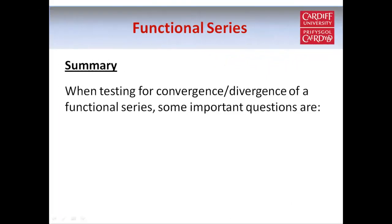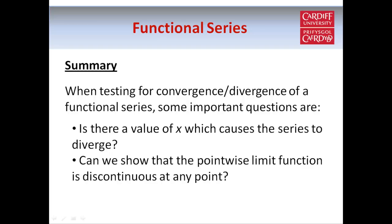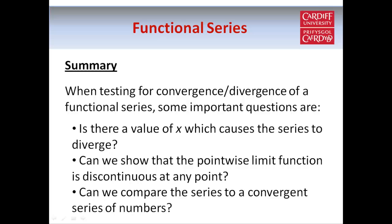To summarize what we've talked about in this tutorial: when testing for convergence or divergence of a functional series, some important questions to consider are — is there a value of x in the domain which causes the series to diverge? Failing that, if the pointwise limit function exists, look for a point of discontinuity; if the limit function is discontinuous at any point and the terms in the series are continuous, then the convergence can't be uniform. If you want to show uniform convergence, compare the series to a convergent series of numbers — that's the essence of the Weierstrass M-test. Not all examples can be solved using these techniques, but these are just a few of the shortcuts to look out for.